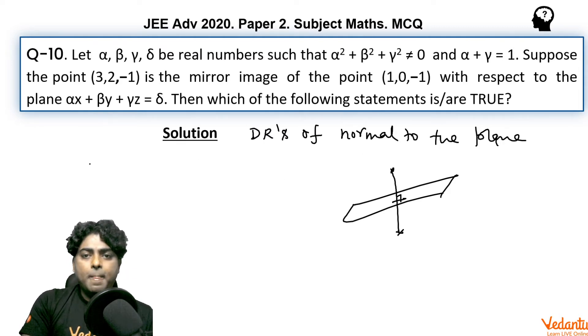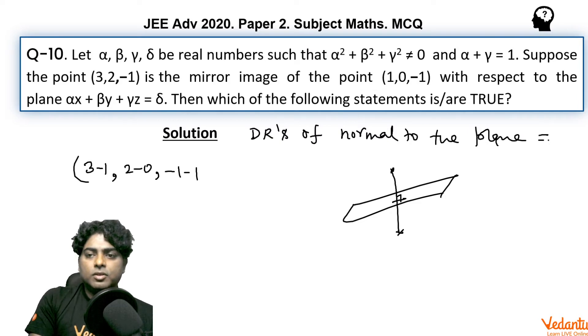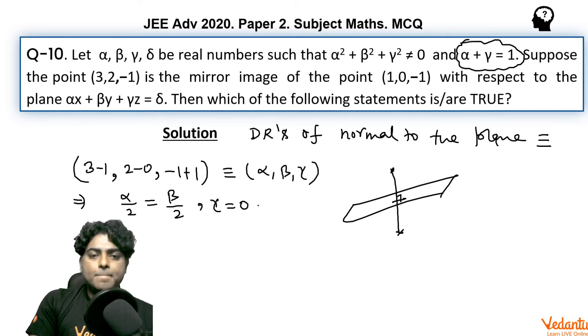So in that manner we can say that (3-1), (2-0), (-1-(-1)) - these are DRs of normal to the plane. Also from the coefficients α, β, γ, we can say directly that α/2 = β/2 and γ should be 0. Now as γ is zero, from this relation you can say that α should be 1, and from this we can say that β is also 1. β = α = 1.